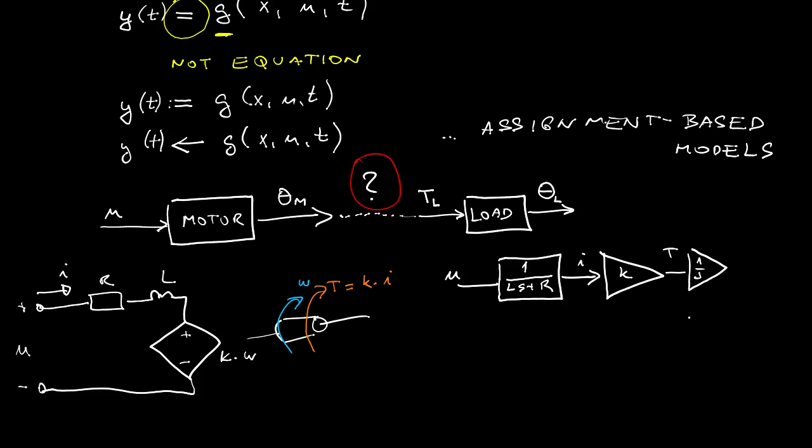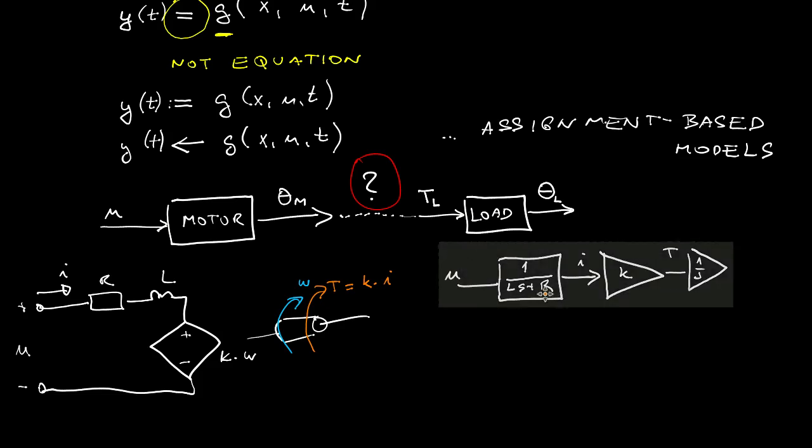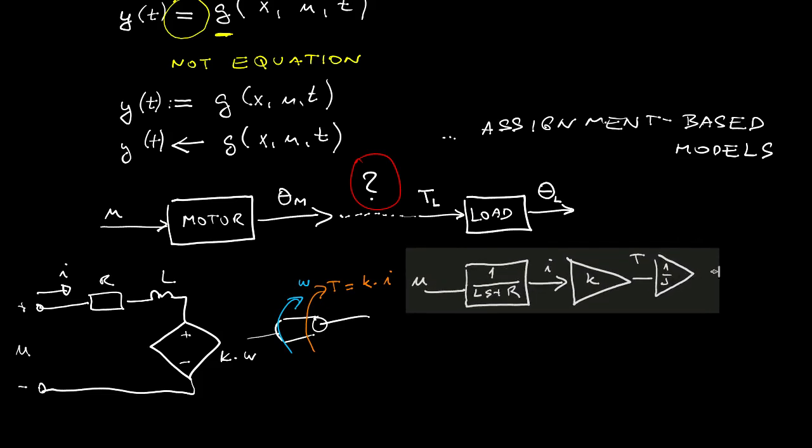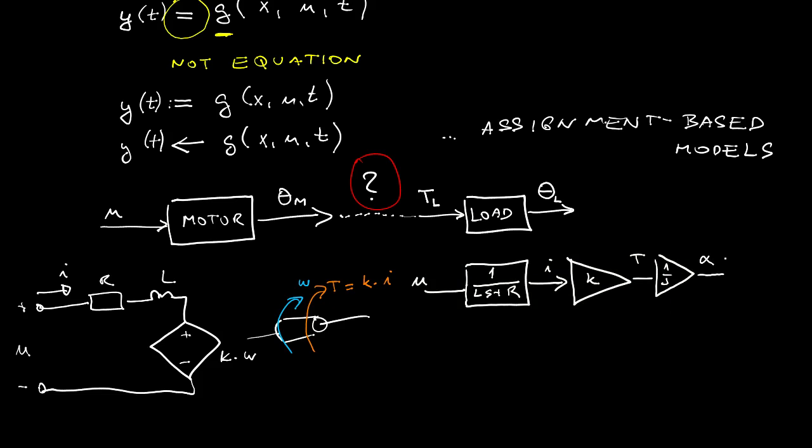Now, we can now rewrite this into a block diagram like this. First, we transform the voltage into the current using the impedance of the winding. Then the current is transformed into the torque by multiplying by the torque constant. Then from torque we get angular acceleration. And after one integration, we obtain angular velocity. And after another integration, we obtain the angle.